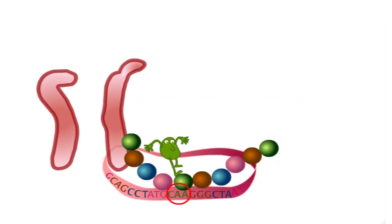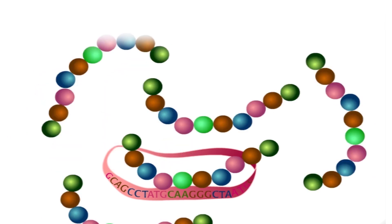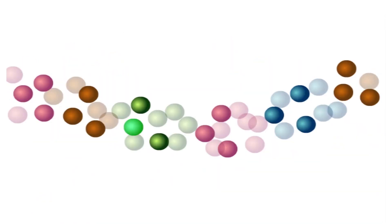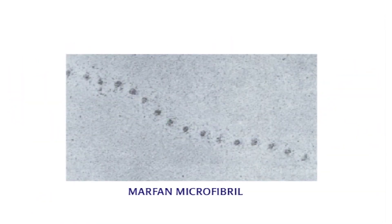In people with Marfan syndrome, a mutation in the gene changes the shape of the Fibrillin protein. The irregularly shaped proteins then assemble into irregularly shaped microfibrils.